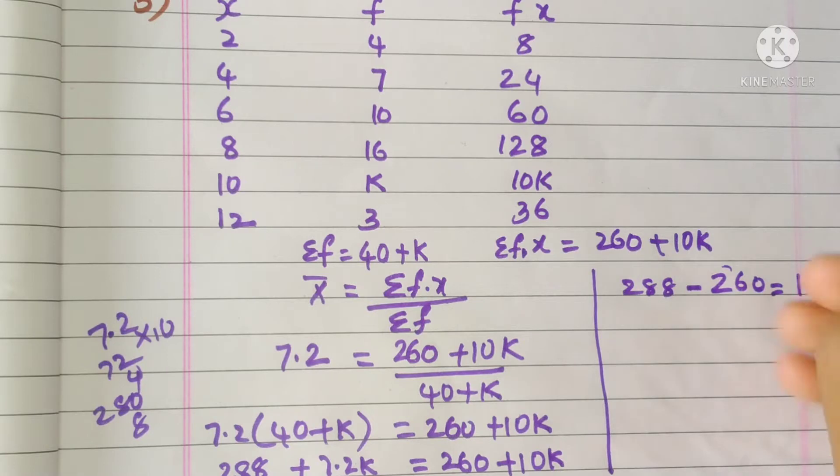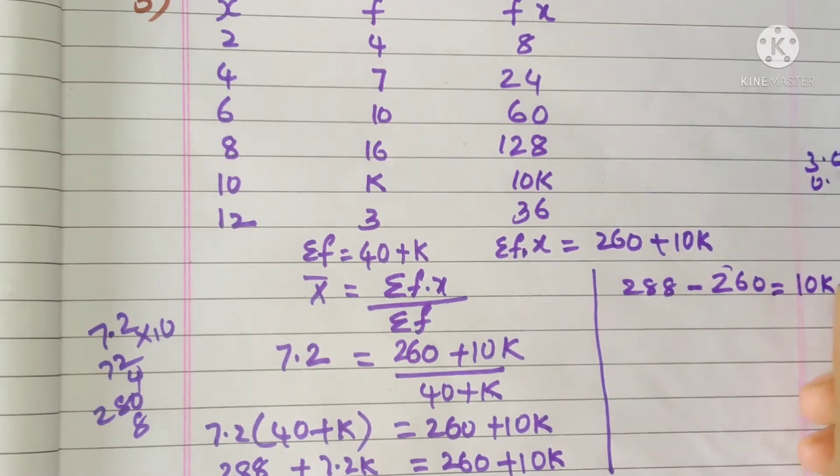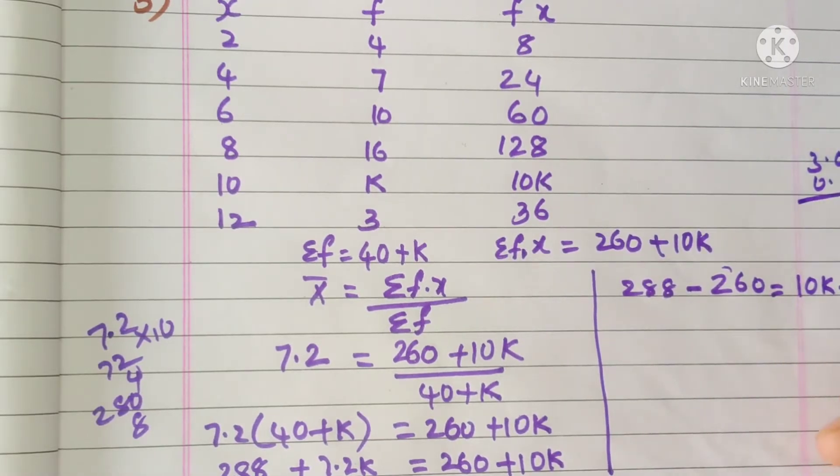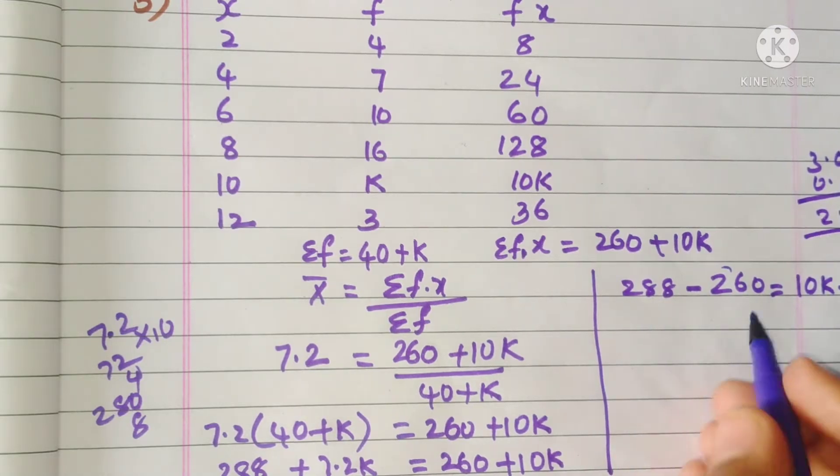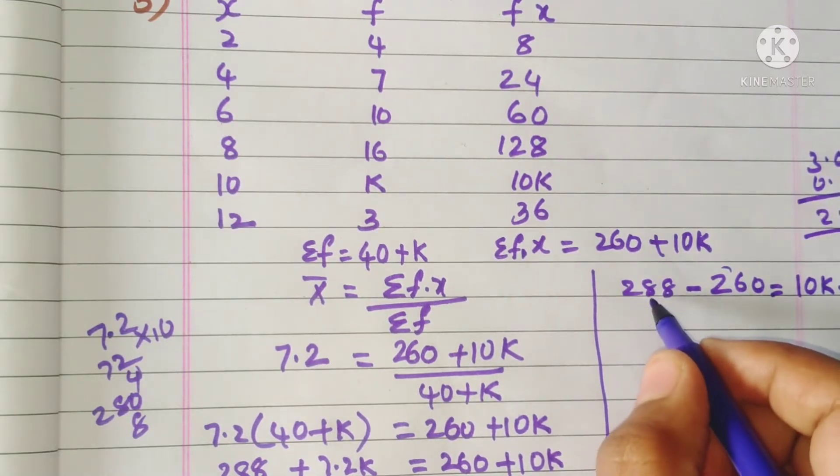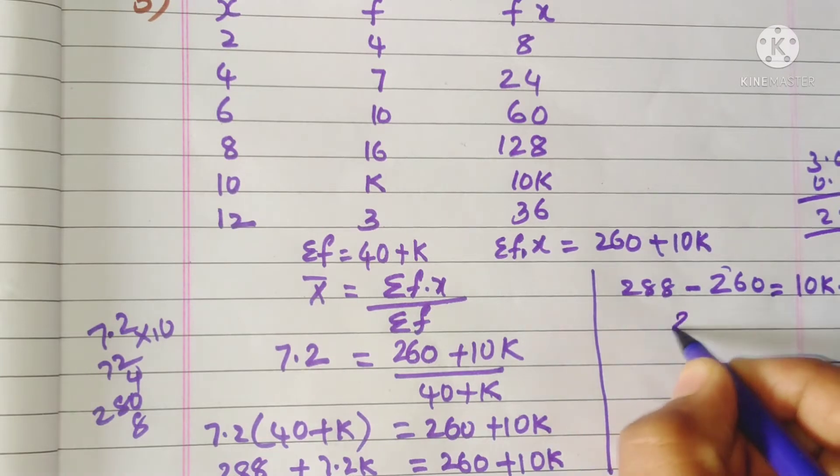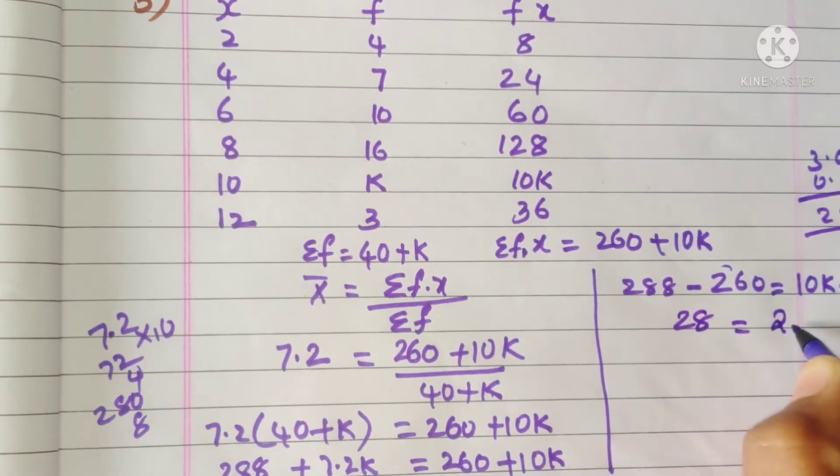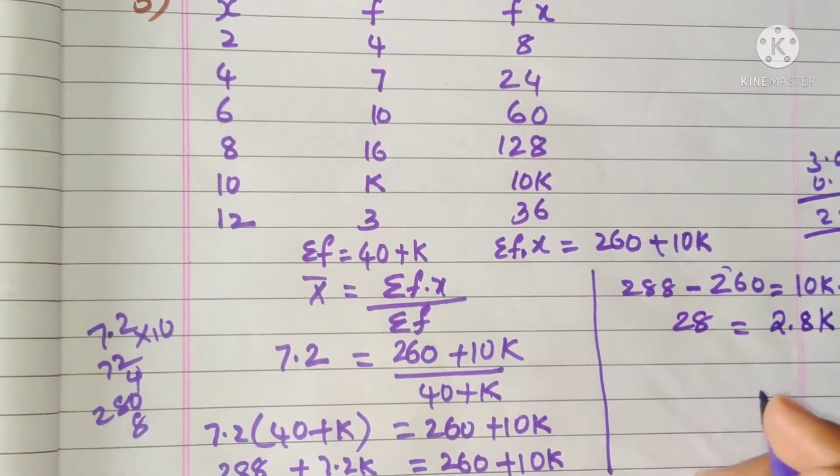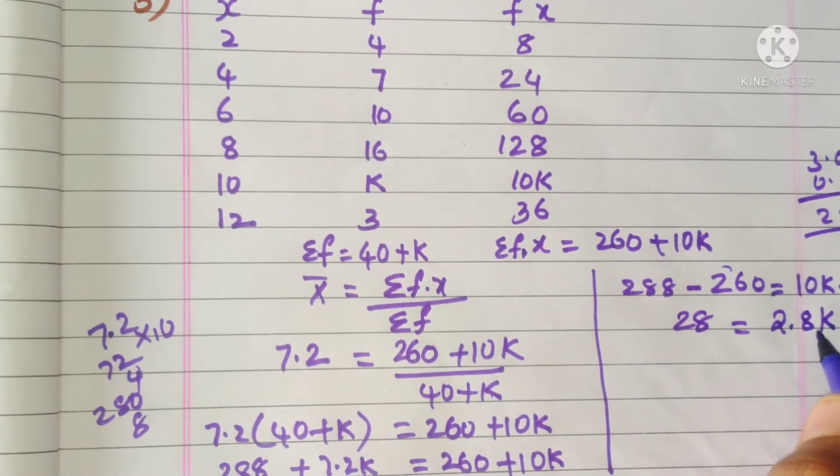10 minus 7 is 3, and 3 minus 0.2 is 2.8. And 280 minus 60 is 20, so it is 28 equals 2.8k.